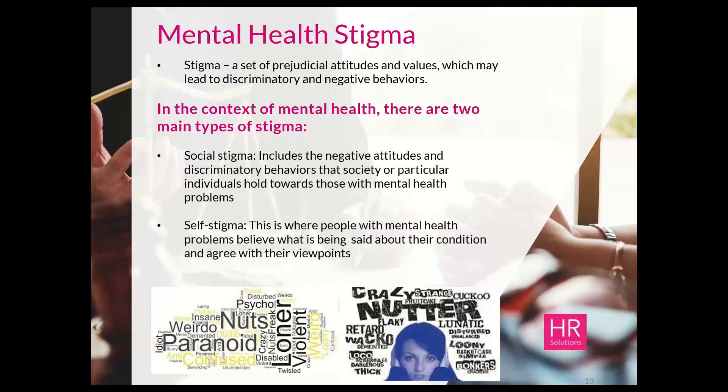There are two kinds of stigma. Social stigma is the negative attitudes and discriminatory behaviours that society has allowed to become normal — we've all grown up with these words, phrases and images, and there's certainly a negative connotation towards mental health problems. Self-stigma is where the person with a mental health problem starts to believe what society is saying — and they then start to agree with those viewpoints and believe that they are disturbed, a weirdo, a wacko, or whatever it might be.